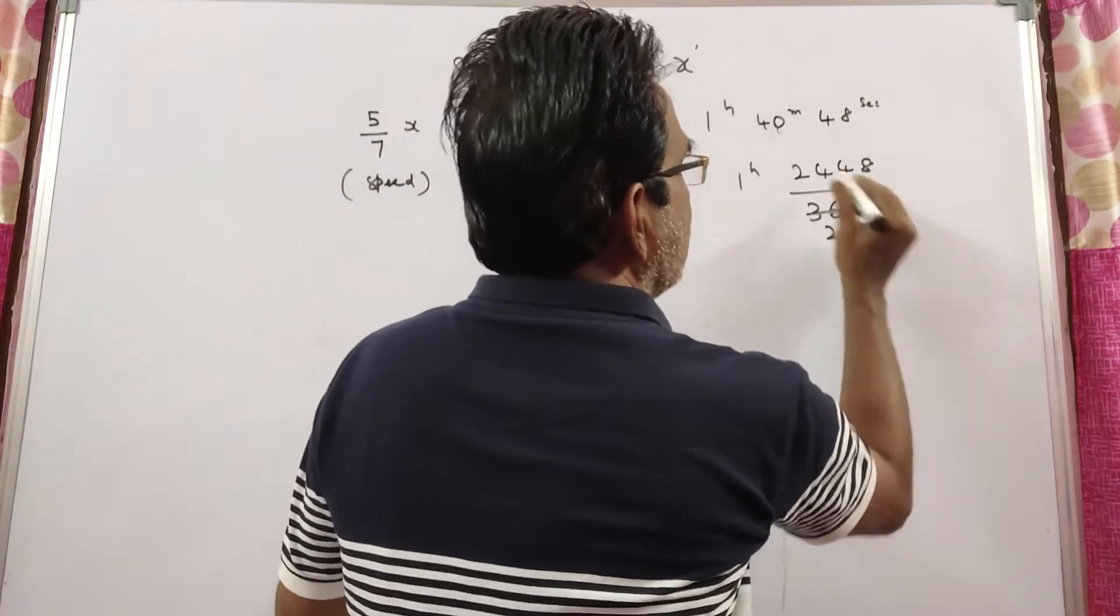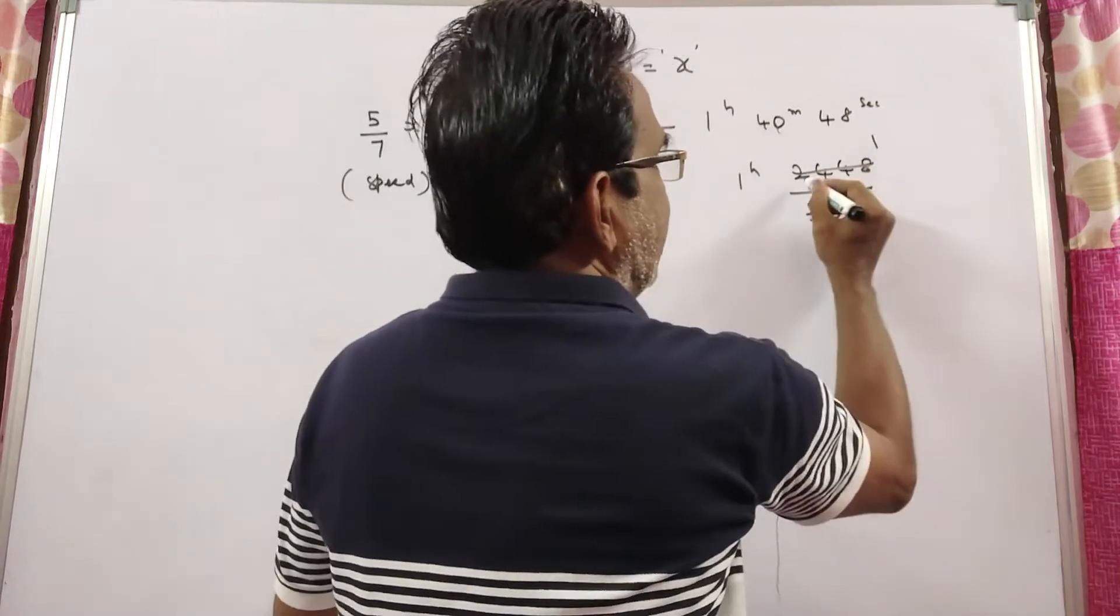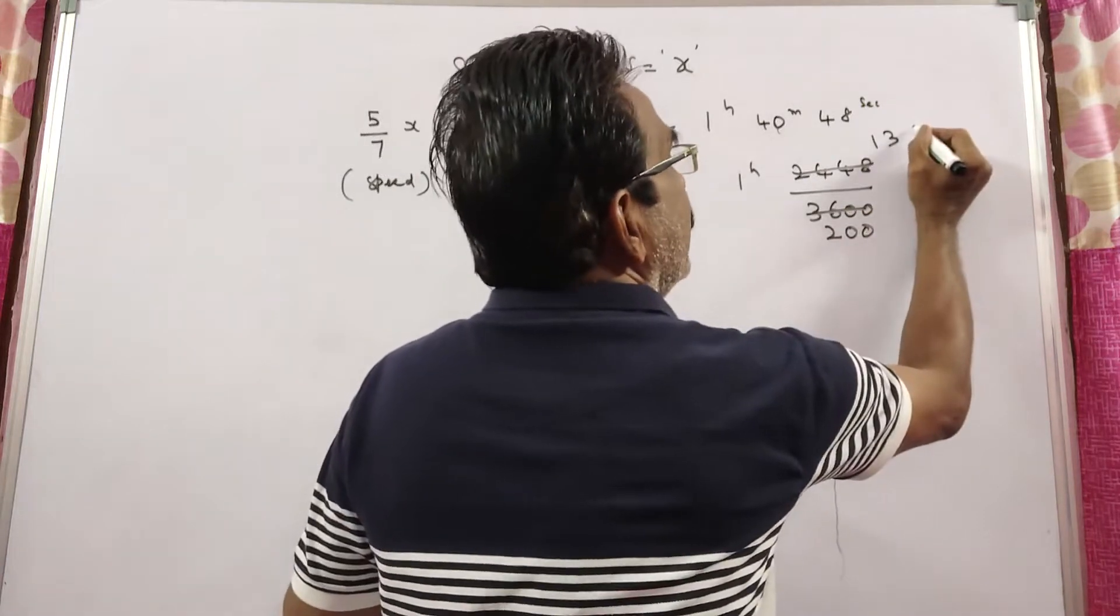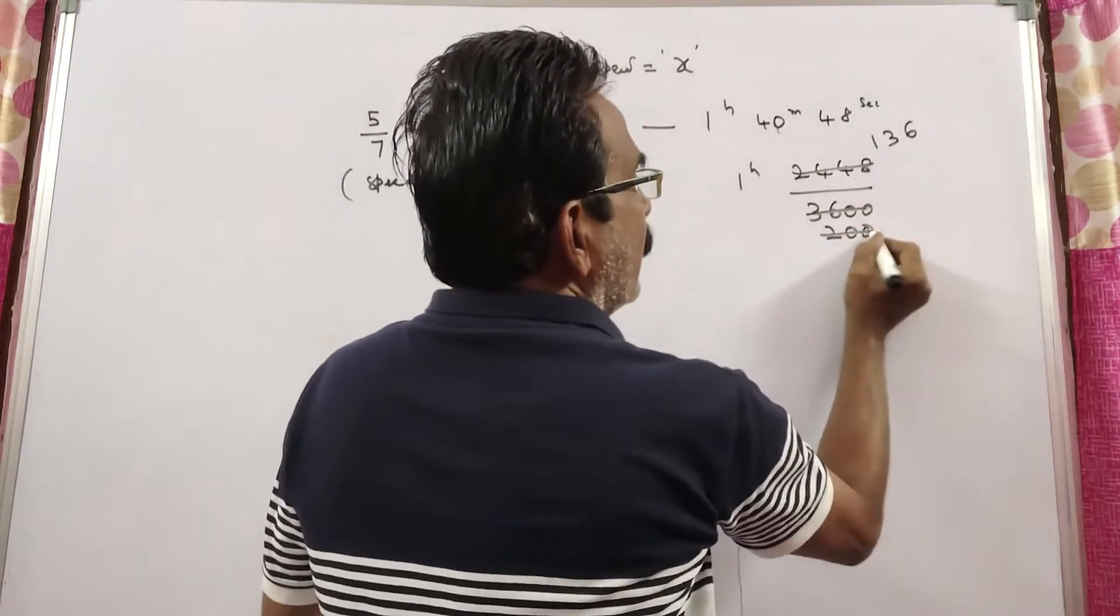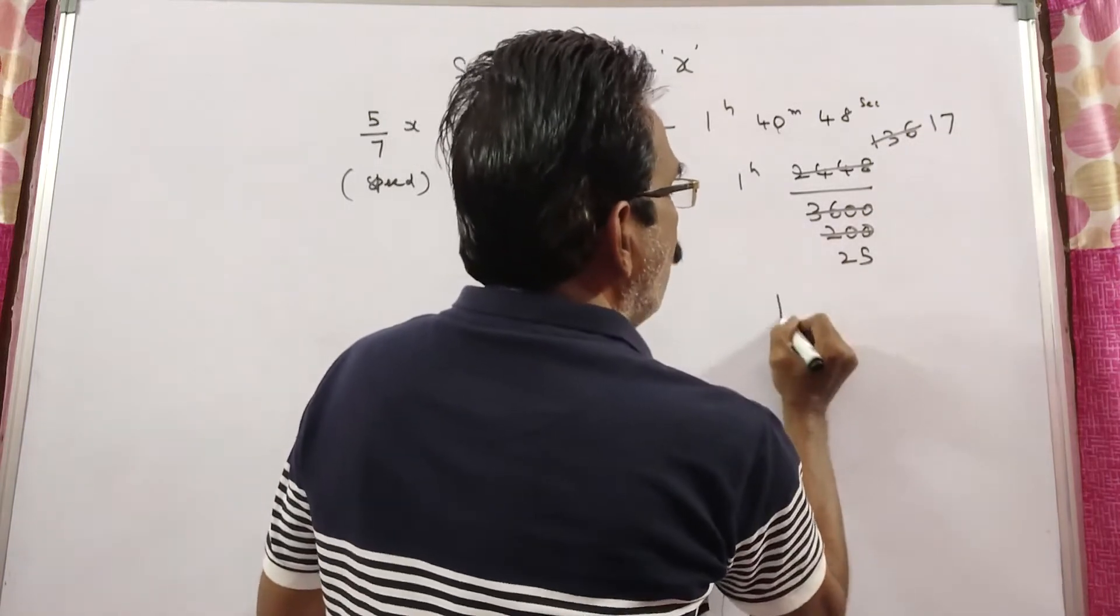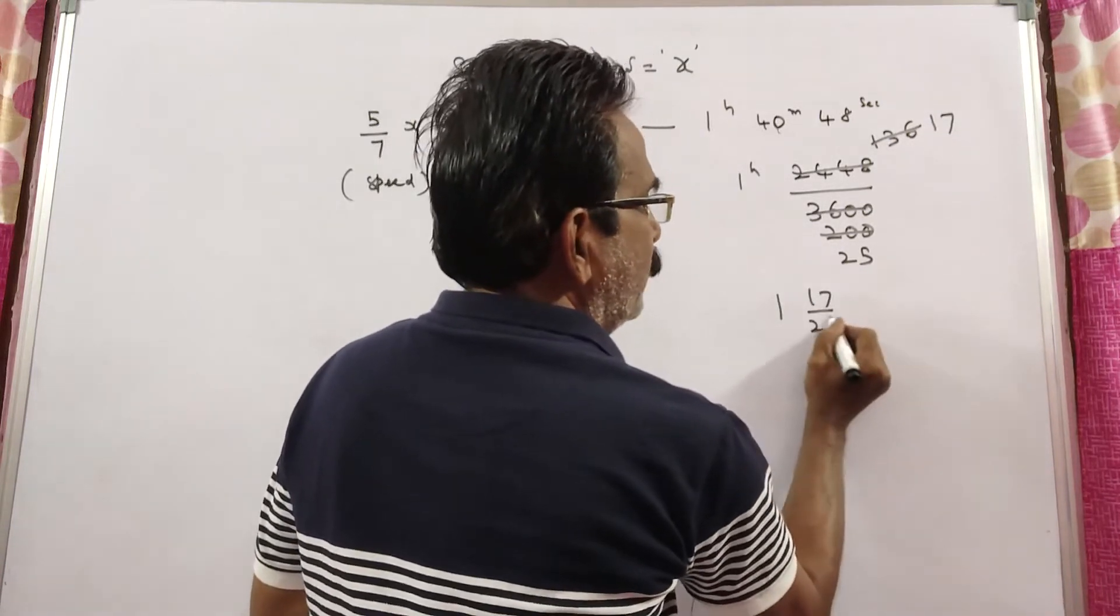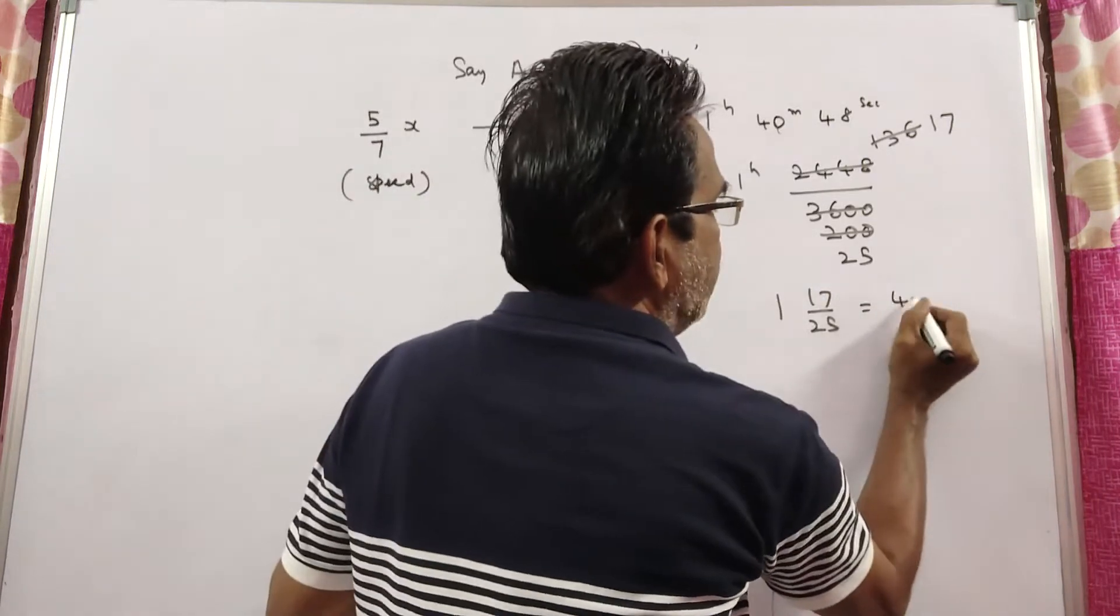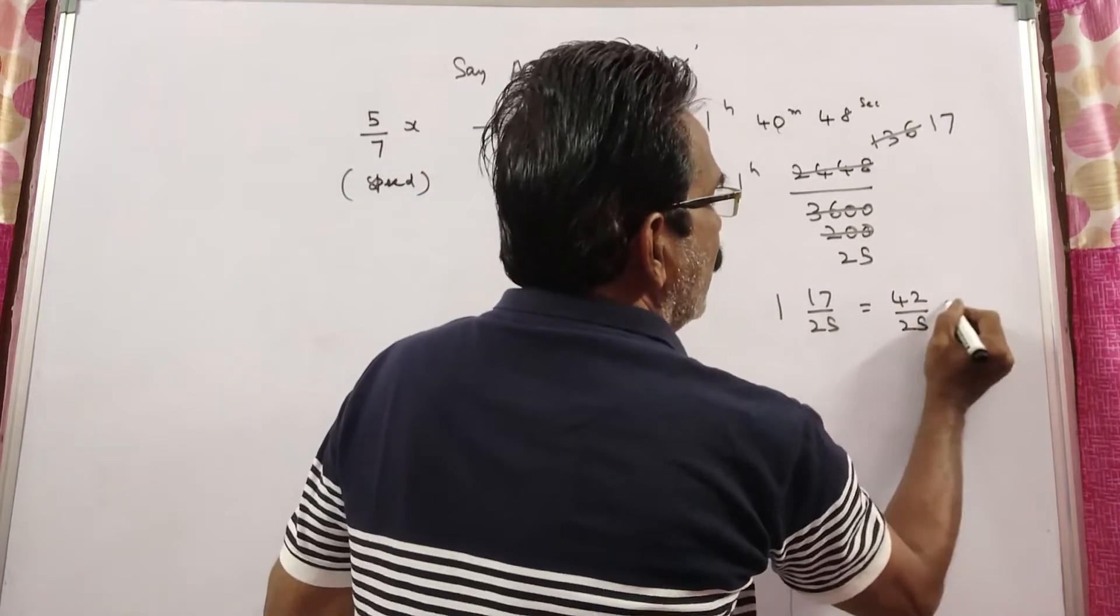Doing the calculation, 2,448 divided by 3,600 simplifies to 17/25 after canceling common factors. So 1 hour plus 17/25 equals 42/25 hours.